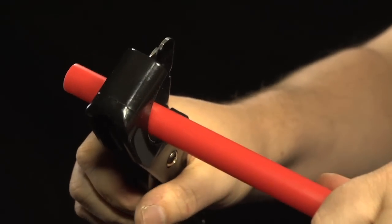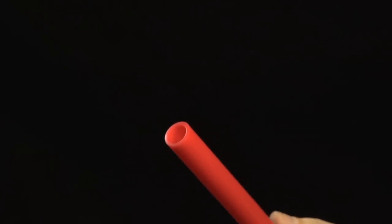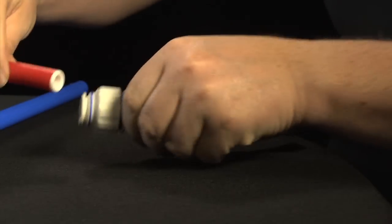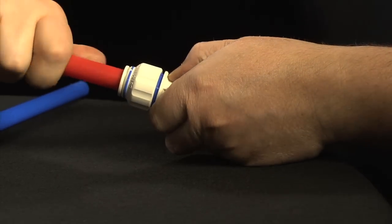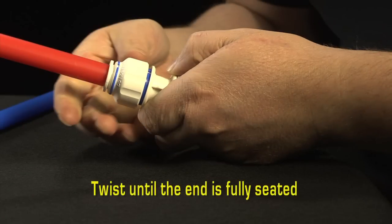To connect, squarely cut tubing or pipe to desired length, removing all burrs. Push fitting onto the end of the tube or pipe. Fitting will grip before it seals. Ensure that tubing or pipe is pushed into the fitting until the end is fully seated into the internal tube stop.